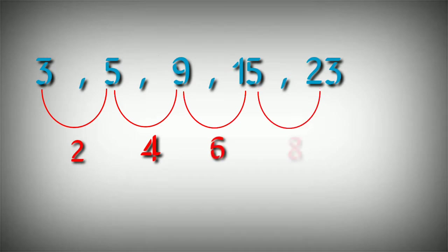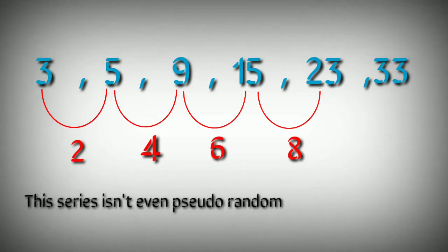Let's take the example of this series. It might look random at first but it is not. The difference between first two numbers is 2. The difference between second and third number is 4. Between third and fourth number it is 6 and for the next pair it is 8. So next number will be 10 more than 23 which is 33. As we could predict the outcome, we can't really consider this series to be truly random.